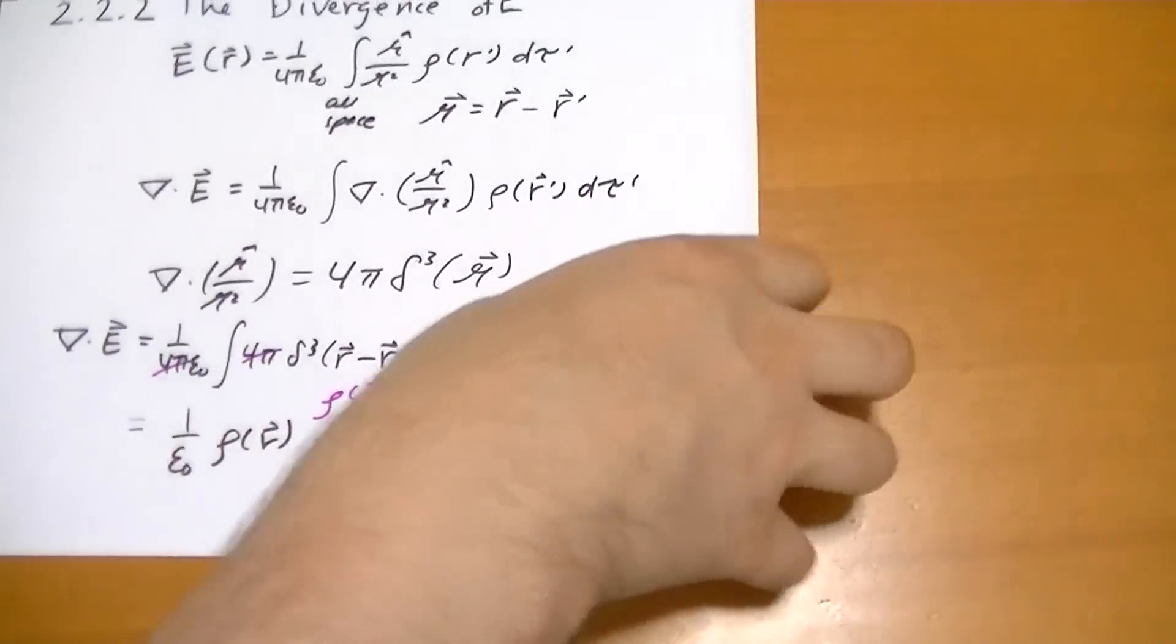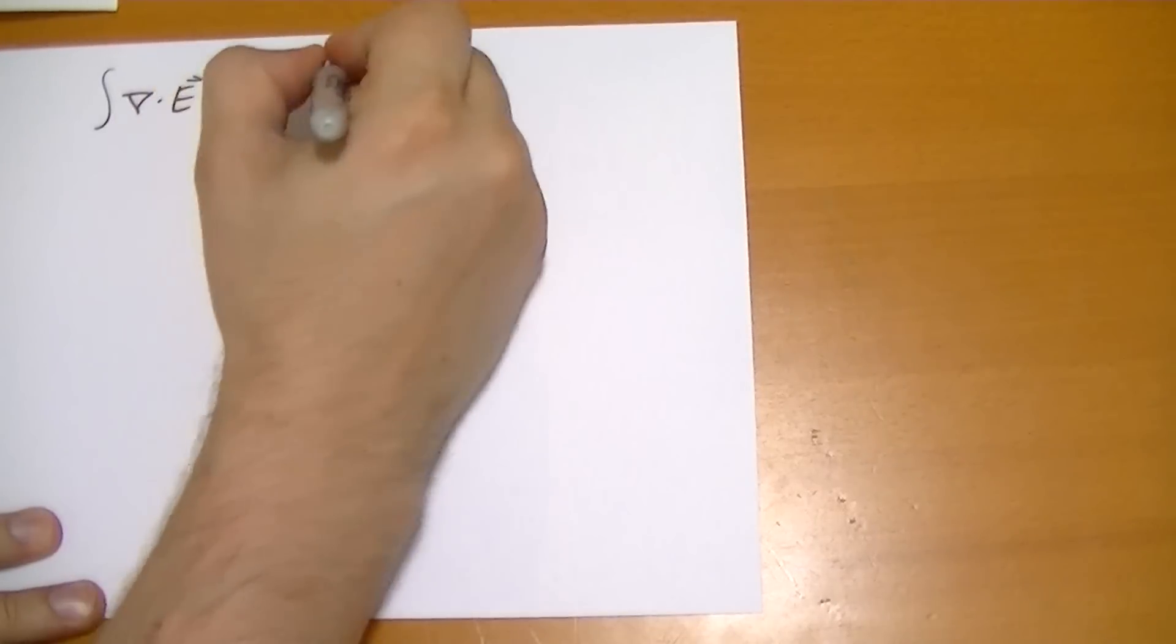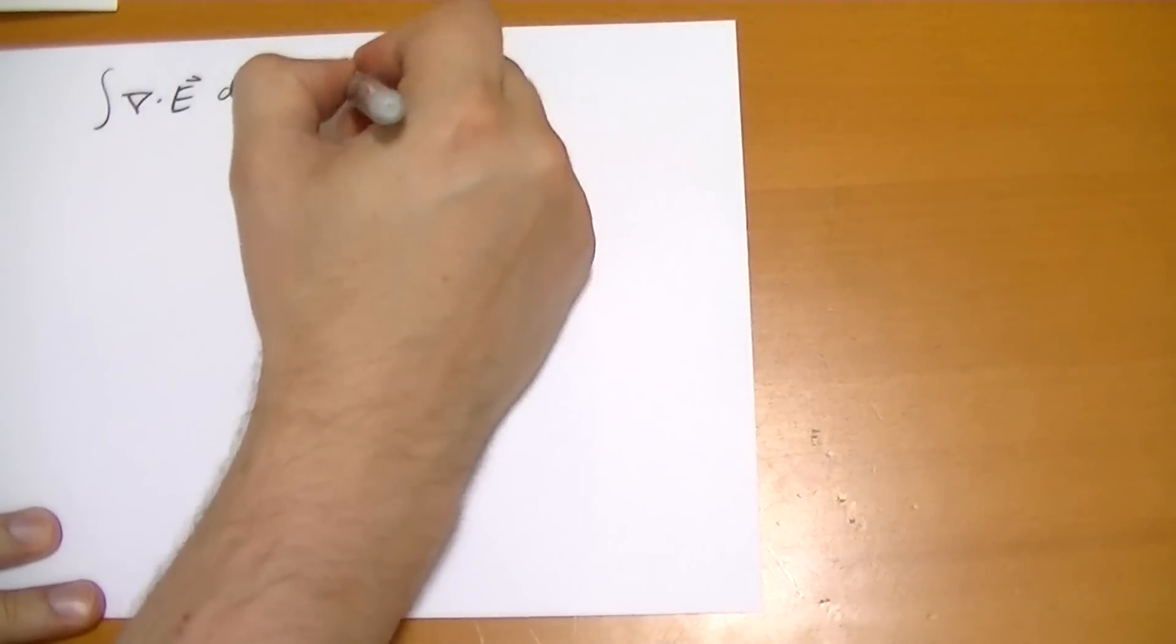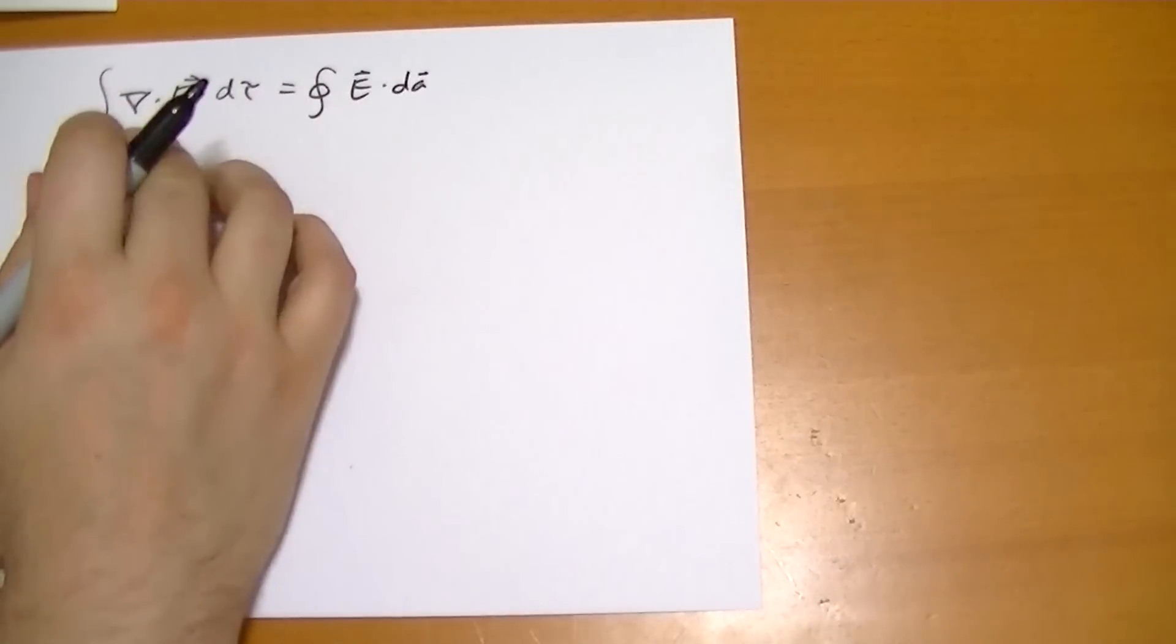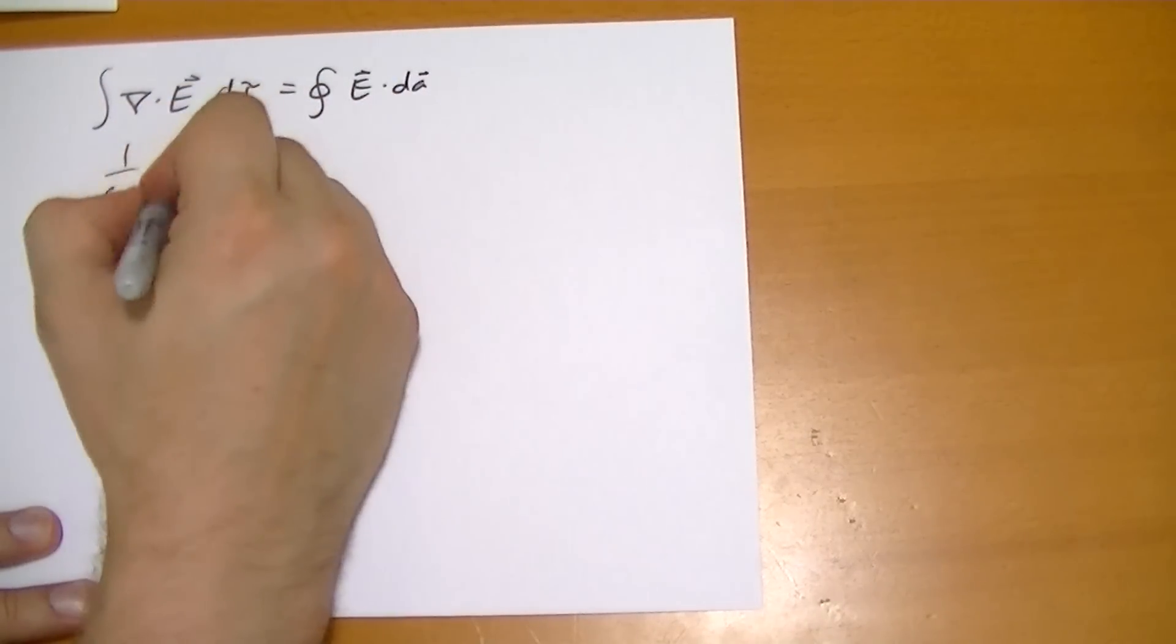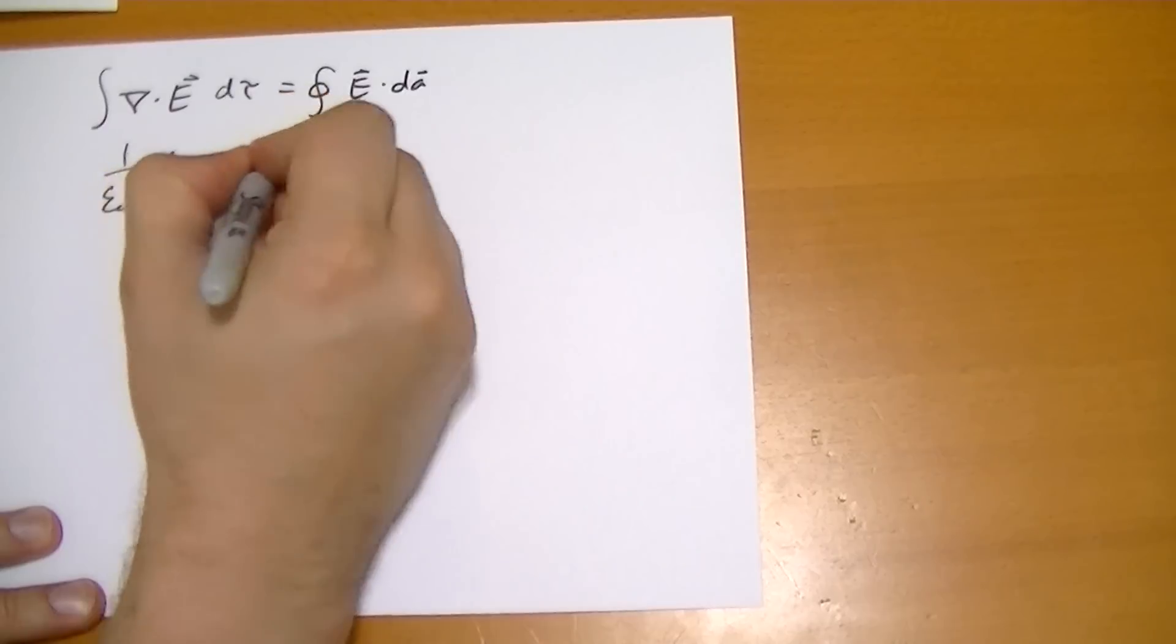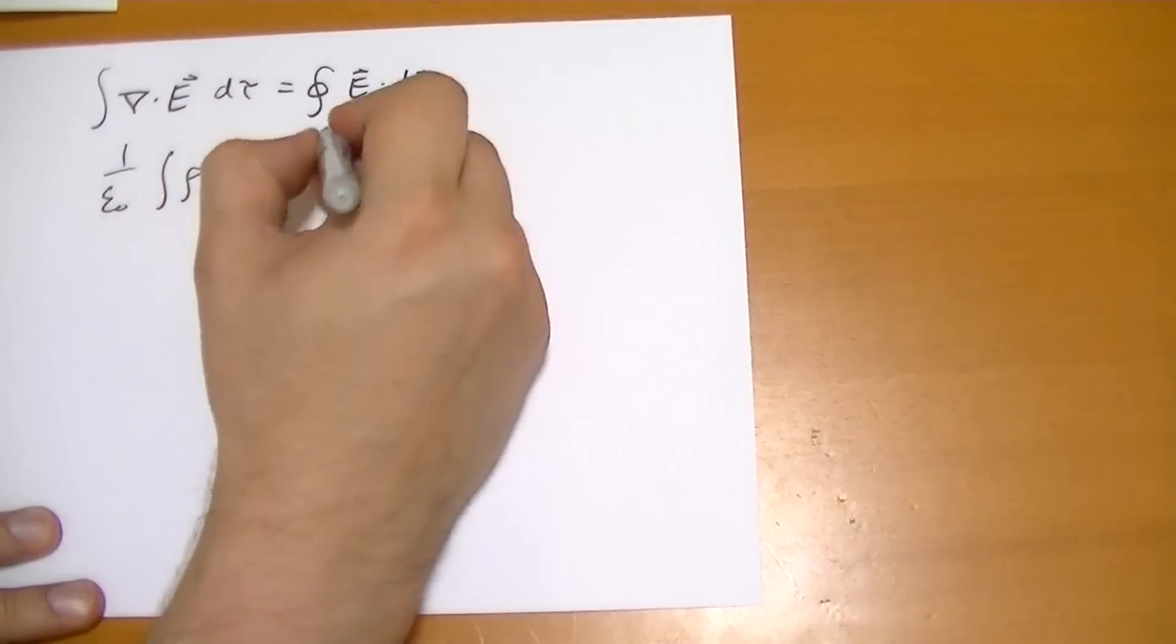And if you wanted to see this in integral form, you just integrate that. So you go to the integral of the divergence of E d tau is equal to the surface integral of E vector dot dA vector, the flux. Well, what's this thing? It has to be 1 over epsilon-naught of the integral of rho d tau. And what is this thing? What is that equal to?